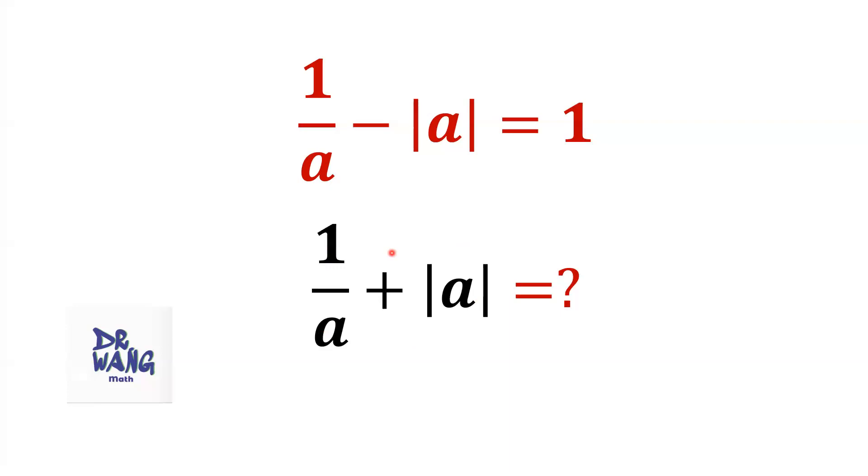If we want to find the value of a first, this is a quadratic equation. You have to get rid of the absolute value sign first, then get rid of the denominator a.